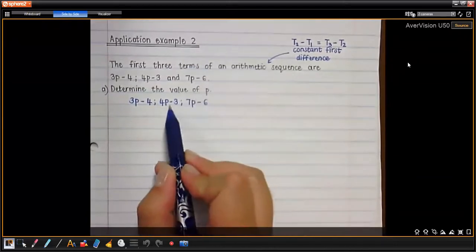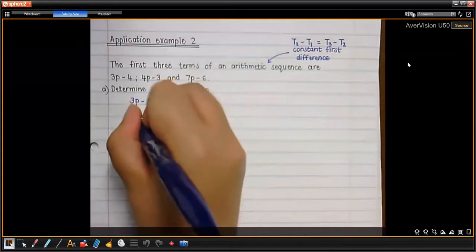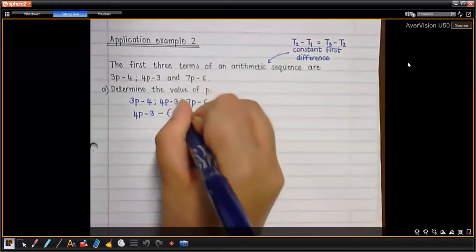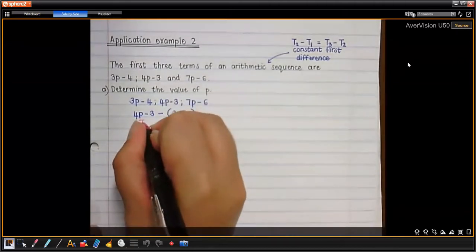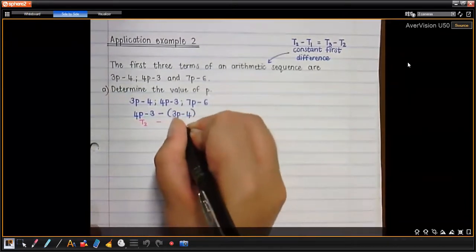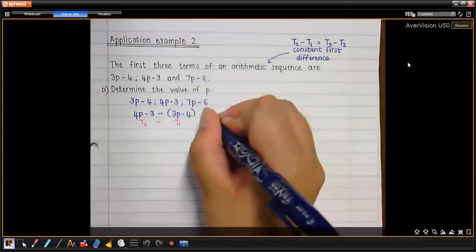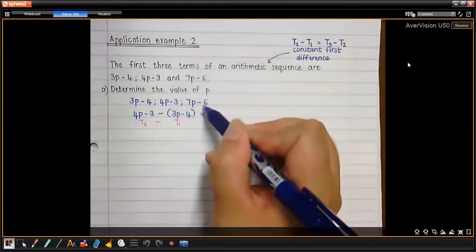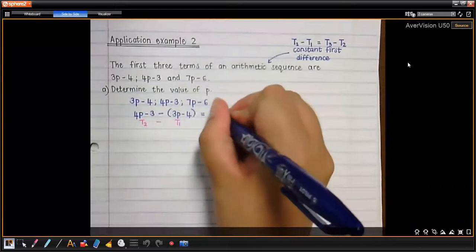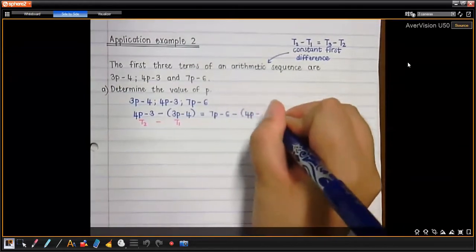So now we say term 2 minus term 1 gives us the first difference. So we have: (4p minus 3) minus (3p minus 4). Remember when subtracting multiple terms you have to put those terms in brackets. I'm taking my second term and subtracting the first term. Because this is an arithmetic sequence, the difference between terms 1 and 2 equals the difference between terms 2 and 3. So: (7p minus 6) minus (4p minus 3) equals term 3 minus term 2.